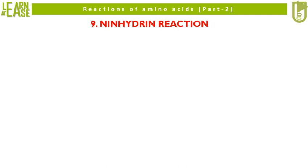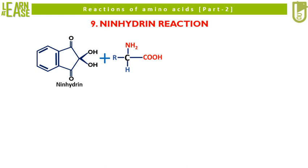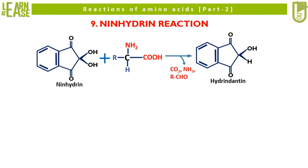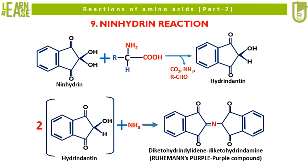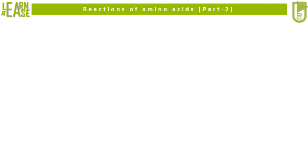Now I will explain the ninth reaction, that is reaction with ninhydrin. Ninhydrin when reacts with amino acid forms hydrindantin. Two molecules of hydrindantin react with free ammonia to give a complex known as diketohydrindamine, which is purple colored. This compound is also known as Ruhemann's purple. This reaction is categorized as a color reaction of amino acid, as when ninhydrin reacts with amino acid it forms a colored end product. Carefully see the portrayed reaction to understand the mechanics of Ruhemann's purple formation.